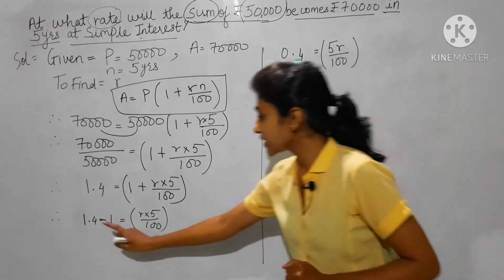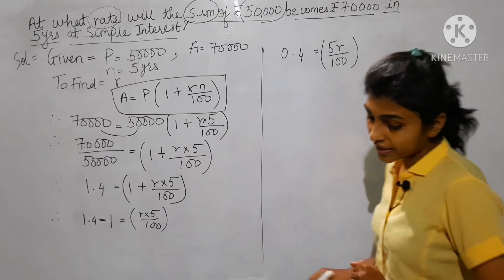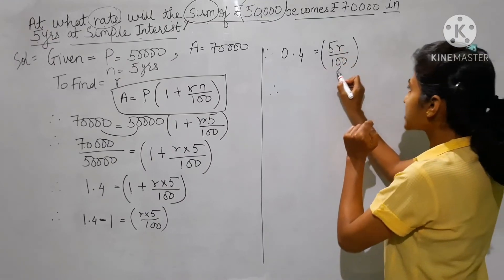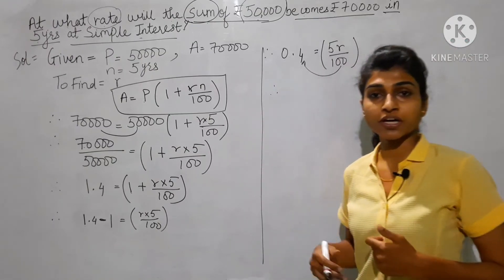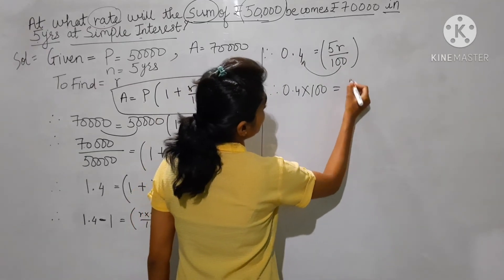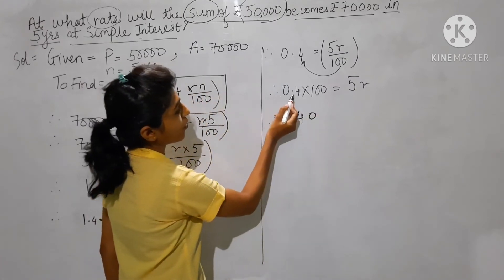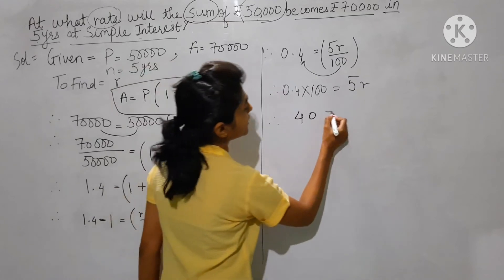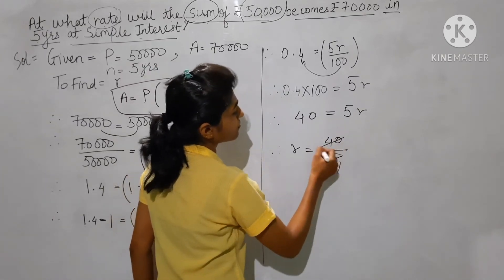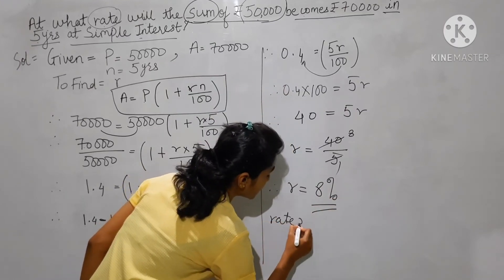Now 5r upon 100 — bring this 100 outside the bracket. The sign changes, it becomes multiplication. So 0.4 multiplied by 100 is equals to 5r. Therefore 0.4 into 100 gives 40. So 40 is equals to 5r. Therefore r is equals to 40 divided by 5. Five eights are 40, therefore r is equals to 8 percent.